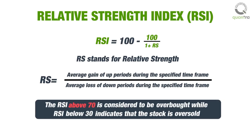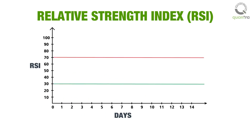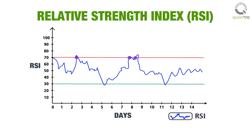Traditionally, an RSI above 70 is considered to be overbought, while RSI below 30 indicates that the stock is oversold. Consider this graph of RSI of a stock, where the red line shows the RSI value of 70 and the green line shows the RSI value of 30. Whenever the RSI graph touches or crosses the red line, it signals that the stock is overbought and the price trend will reverse — hence sell the stock. Similarly, if the RSI graph touches or crosses the green line, it indicates that the stock is oversold and the price trend is about to reverse — hence buy the stock.